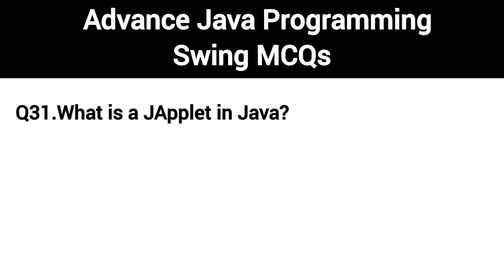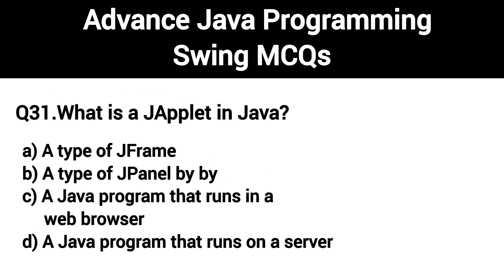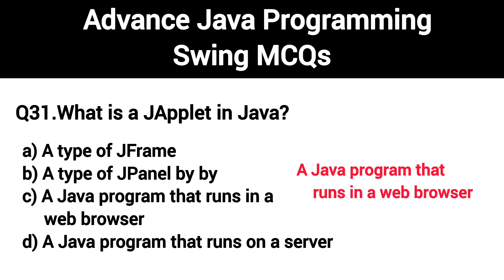Q31. What is a JApplet in Java? The right answer is Option C: A Java program that runs in a web browser.